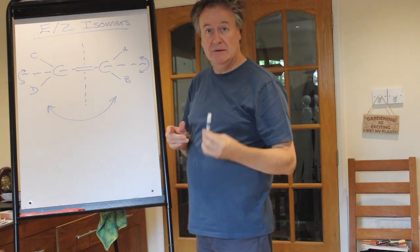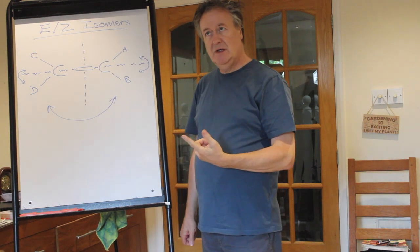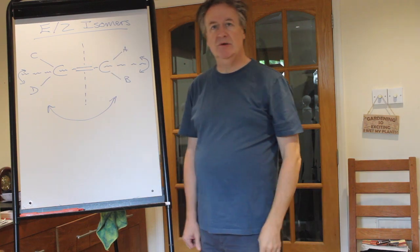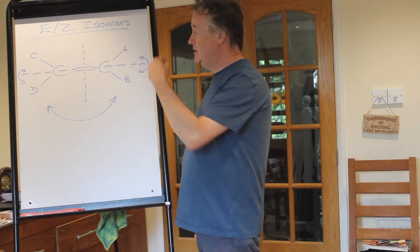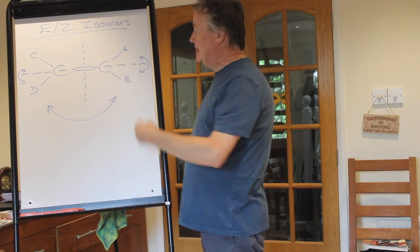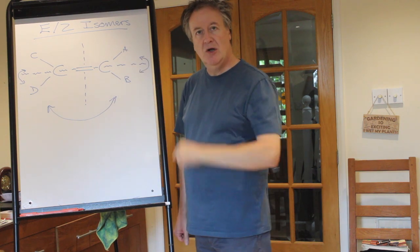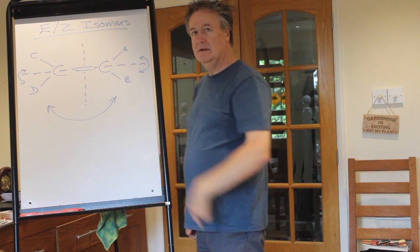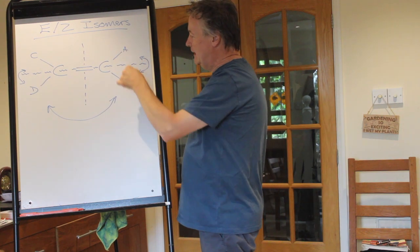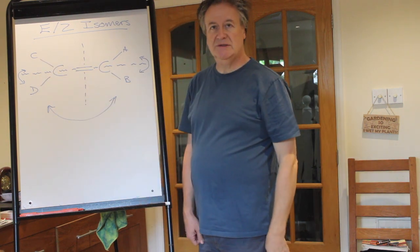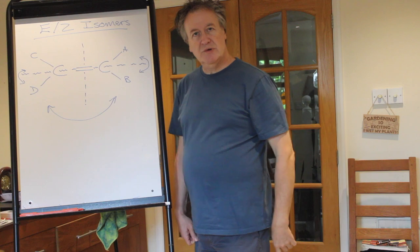Not all alkenes show E/Z isomerism. The first thing to realise is that if everything is the same around the double bond - like in ethene - E and Z doesn't apply, because you only get E and Z when there is the ability to have a difference. With ethene, A, B, C and D are all hydrogen. Also, if you have the same thing on one of the carbons - say CH3 and CH3 - you will not get E or Z. It's only when A and B are not the same AND C and D are not the same that you get geometric isomerism.